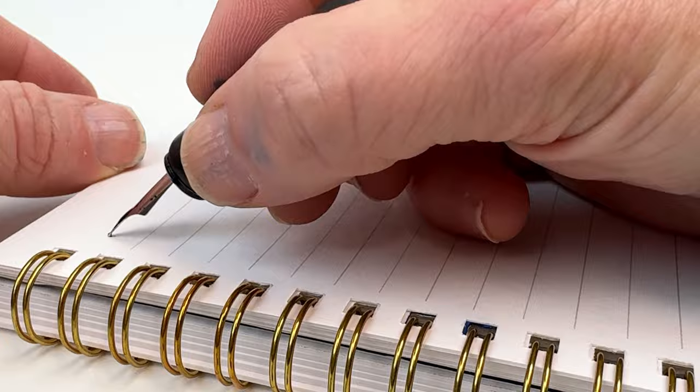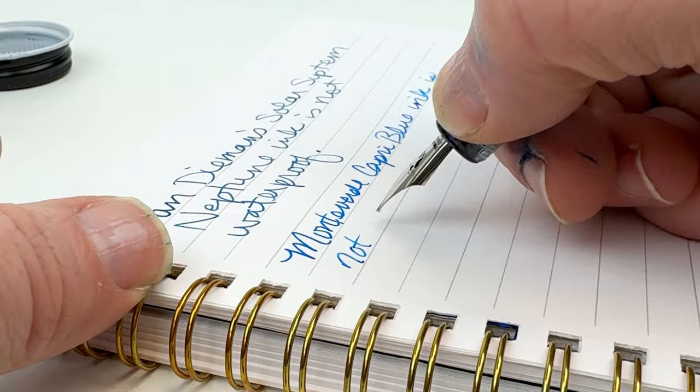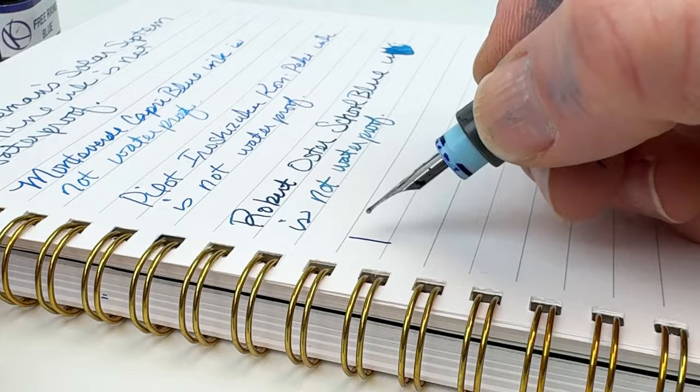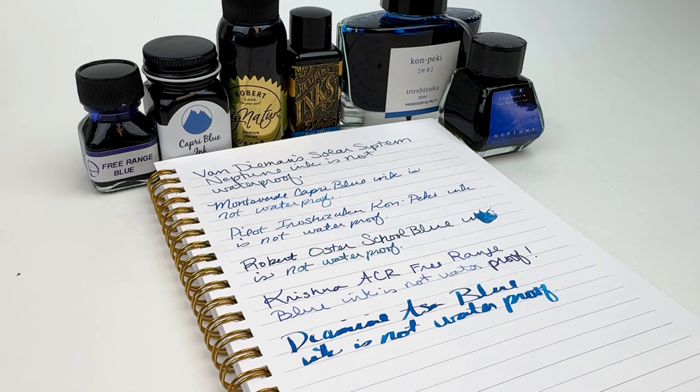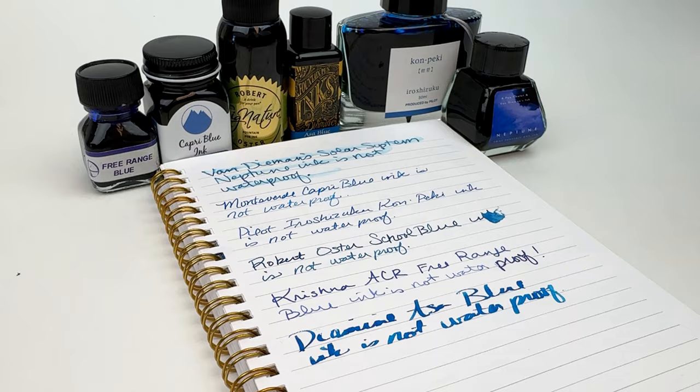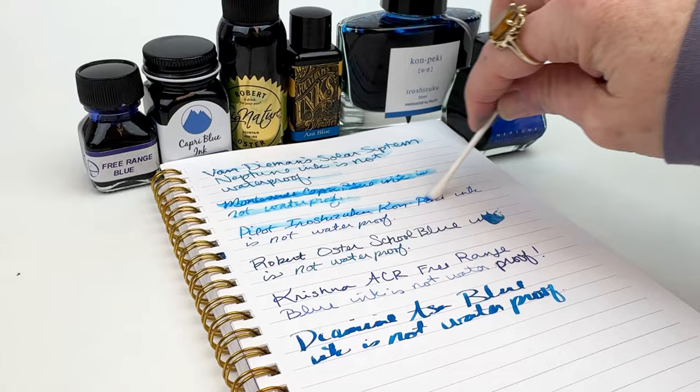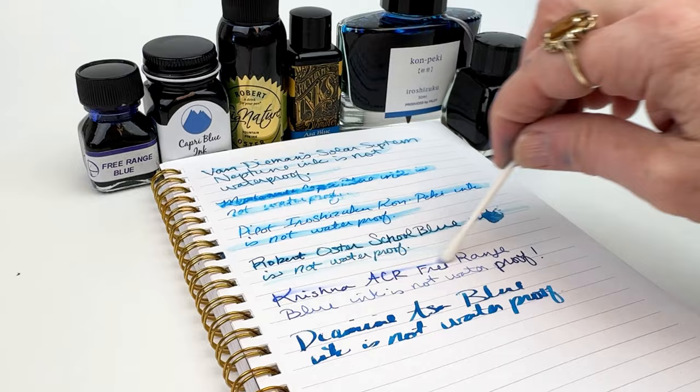Next, we put them all through a water test. For the water test, we wrote a writing sample with each of the six inks in the monthly comparison. Then we waited a minute, and then we came back with a wet cotton swab and swiped across the top to see how affected it was by exposure to water. If it's really important to you that your blue everyday ink is more water resistant, you'll want to pay attention to the results of this water test in today's Best Everyday Blue Ink comparison.